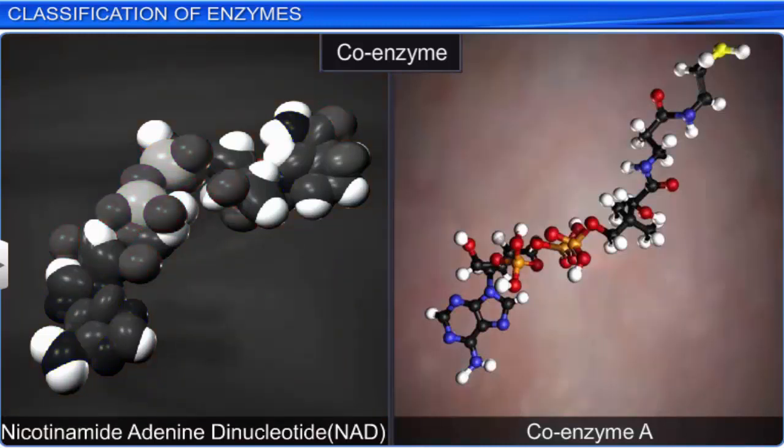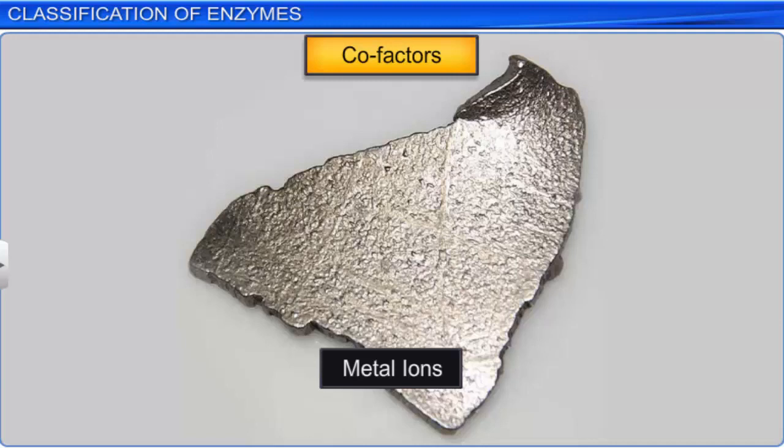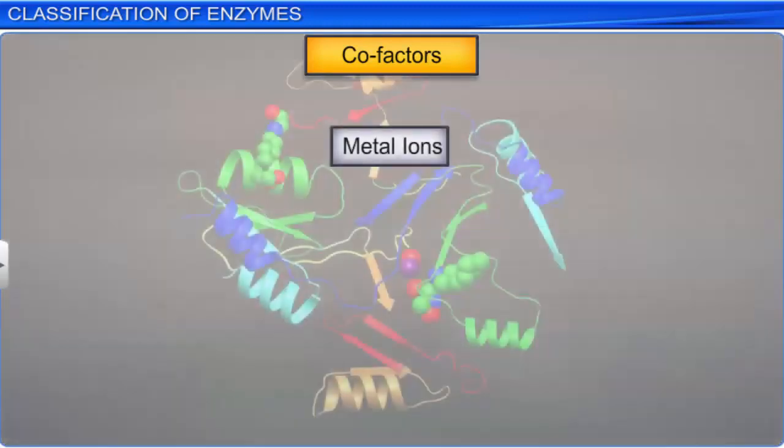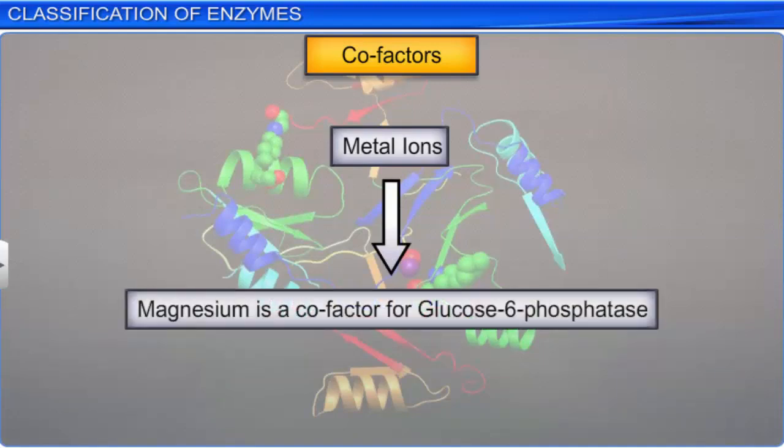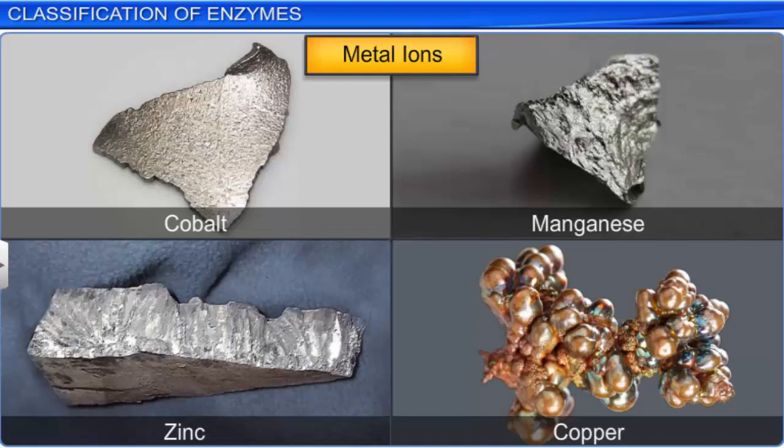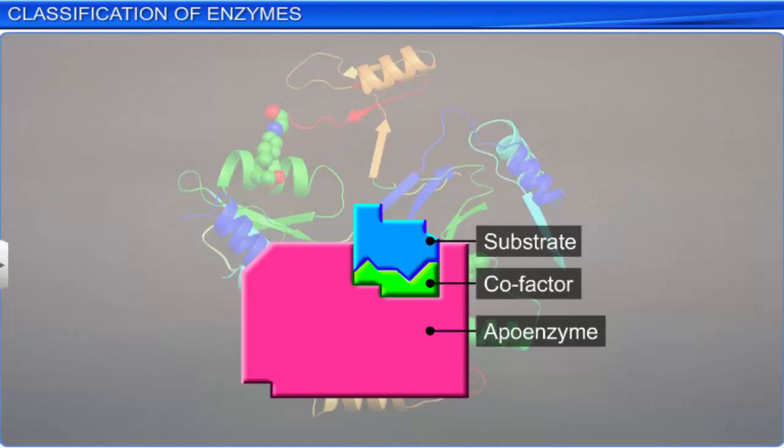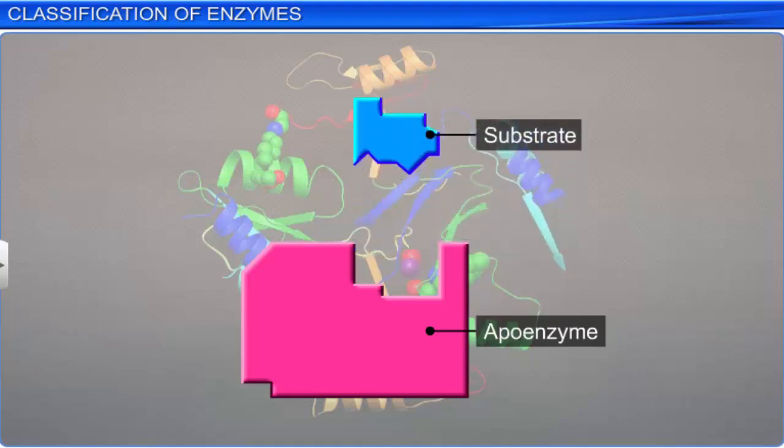The third type of cofactors is metal ions. They are required by enzymes to form coordination bonds with side chains at the active site and one or more coordination bond with the substrate. For example, magnesium is a cofactor for glucose-6-phosphatase, and manganese is a cofactor for arginase. Some commonly occurring metal ions are cobalt, manganese, zinc, and copper. A cofactor is very crucial for the catalytic activity of the enzyme. If the cofactor is removed, the enzyme loses its ability to perform catalysis. Therefore, the classification of enzymes provides information about reactions carried out by different enzymes.